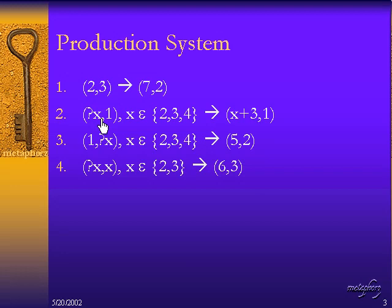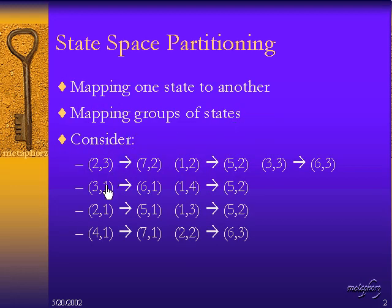So if we go ahead and look at the individual state transitions that match this rule, we've got 2 comma 1, 3 comma 1, and 4 comma 1, which should match to 5 comma 1, 6 comma 1, and 7 comma 1. And if we go back we find that indeed that's the case.